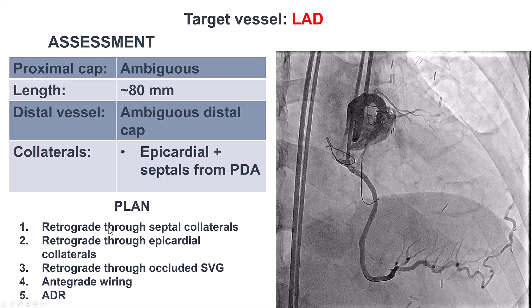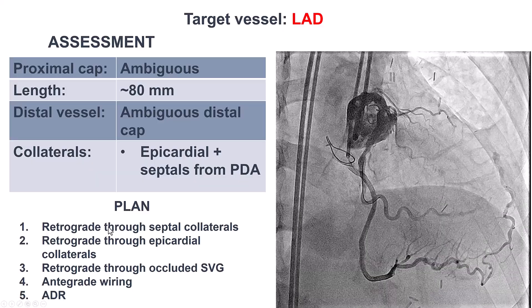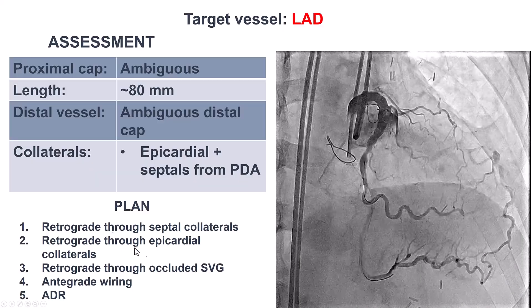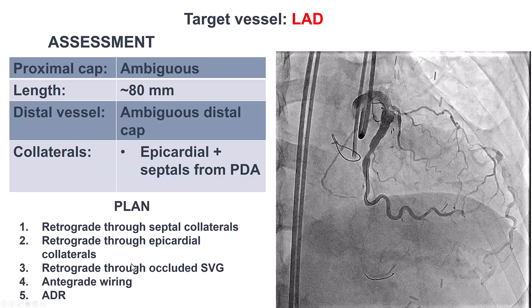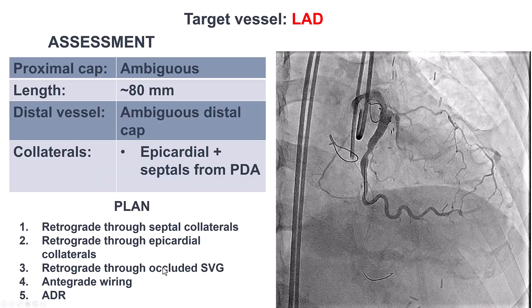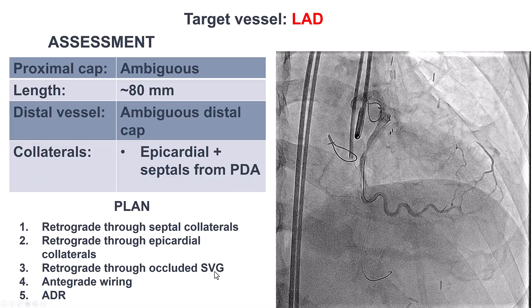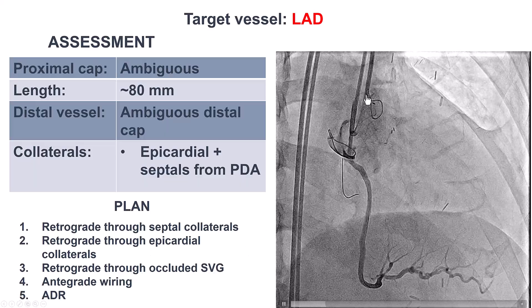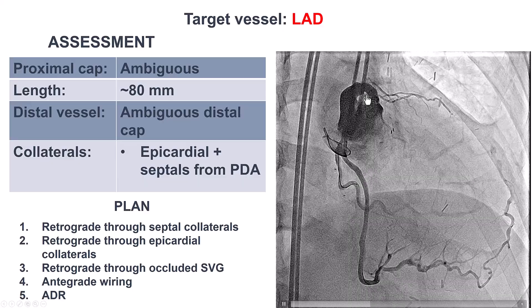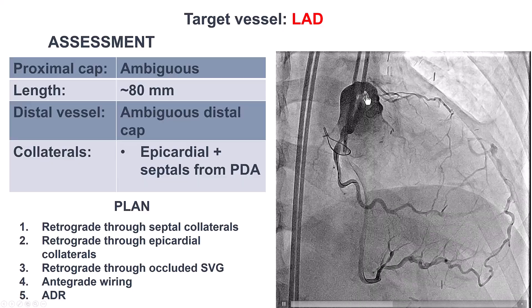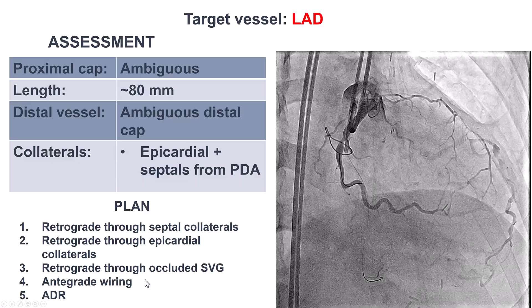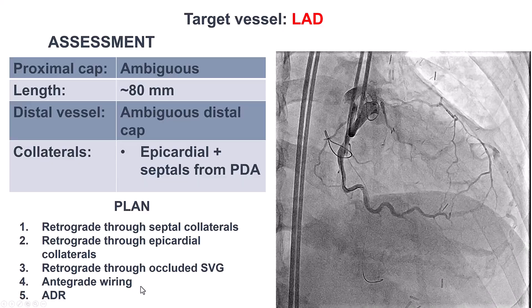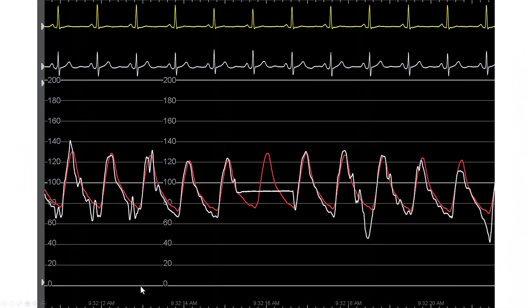Our plan in this case was to start with a primary retrograde approach through septals. If it didn't work, go through the epicardial, and then through the occluded saphenous vein graft. The antegrade options did not seem very promising because of the blunt occlusion of the proximal LAD, but that remained as a last resort. The patient's hemodynamics were good and the EKG was okay.